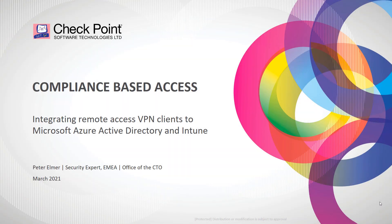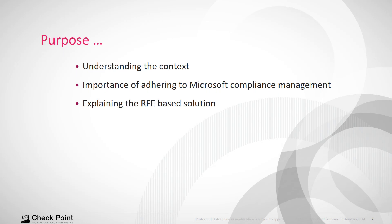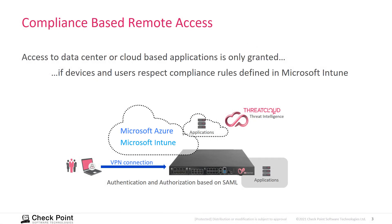The following describes a solution scenario where access to VPN gateways is based on the compliance defined in Microsoft Intune. We want to make sure that only devices that are compliant according to the compliance rules defined in Microsoft Intune are able to access the environment. You can establish a VPN connection, perform a SAML-based authentication, and only if Microsoft Intune declares the device to be compliant will the user get access to applications hosted in the cloud or on the on-premises data center.